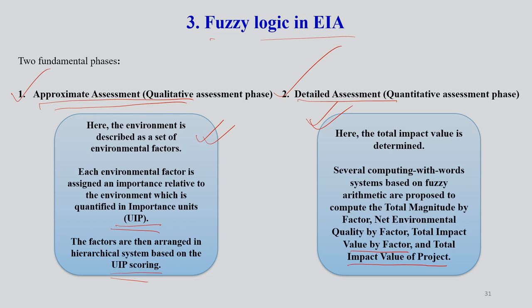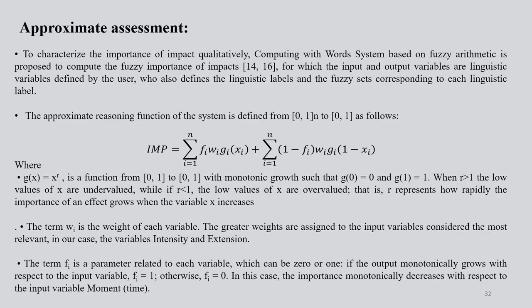In approximate assessment, we characterize the importance of impact qualitatively. We compute a system based on fuzzy arithmetic to compute the fuzzy importance of impact. Impact and output variables are linguistic variables defined by the user, who also defines linguistic levels and fuzzy sets corresponding to each linguistic level. The approximate reasoning function is defined from [0,1] × [0,1] → [0,1].